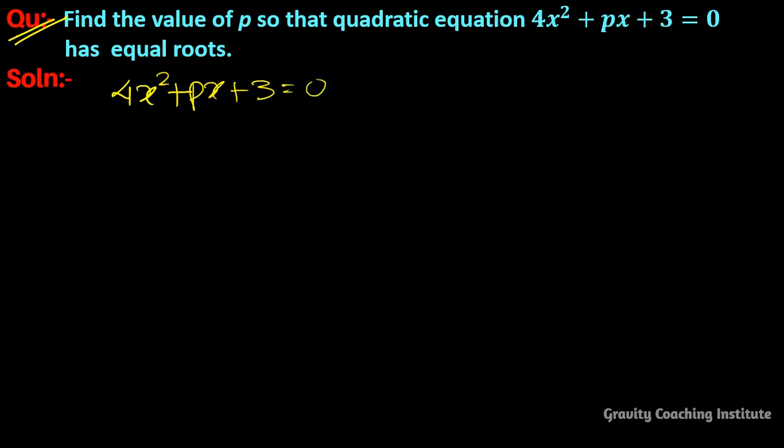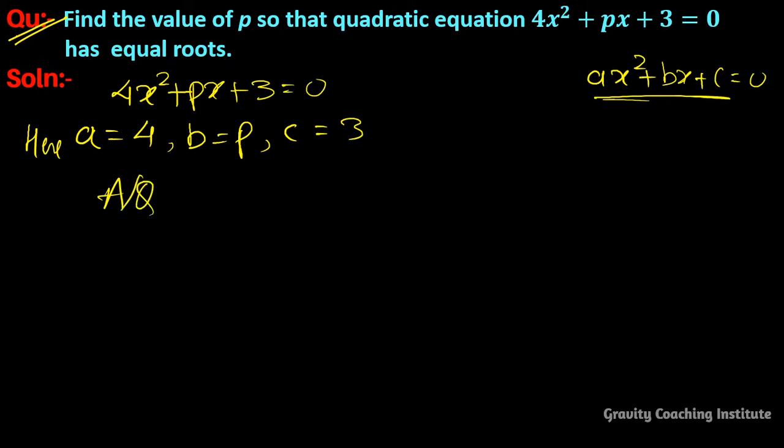Now we compare with the standard quadratic equation ax² + bx + c = 0. So we get a = 4, b = p, c = 3. And according to the question, this equation has equal roots.